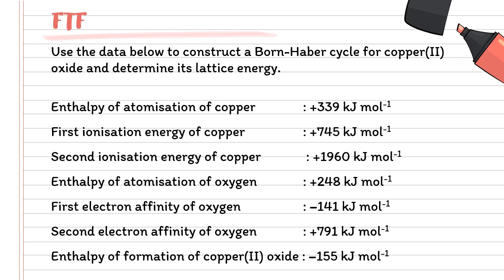For face-to-face questions, we need to use the data below to construct a Born-Haber cycle for copper 2 oxide and determine its lattice energy. The question is still the same, but now the molecule has changed. So we have copper and also oxygen. Copper with 2 plus charge, oxygen with 2 minus charge, so you're going to get CuO.